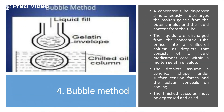The last method for preparation of soft gelatin capsules is the bubble method. It comprises a concentric tube dispenser that simultaneously discharges molten gelatin from the outer annulus and liquid contents from the inner tube. The liquids are discharged into a chilled oil column as droplets consisting of a liquid medicament core with a molten gelatin envelope. The droplets assume a spherical shape under surface tension forces and the gelatin congeals on cooling. The finished capsules must be degreased and dried.